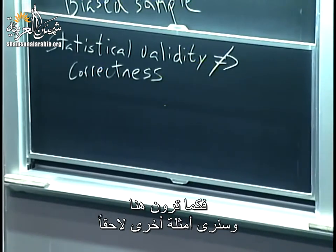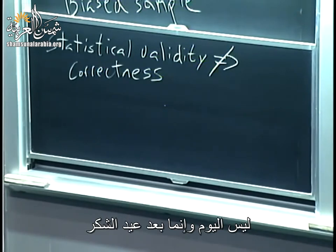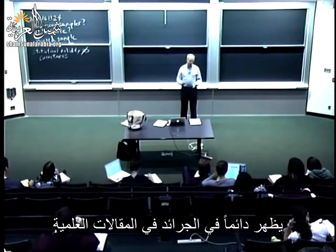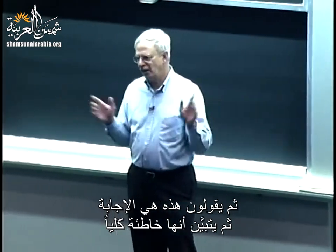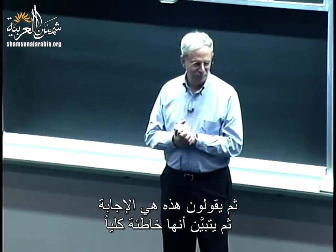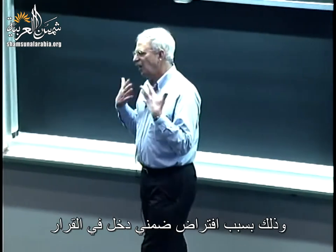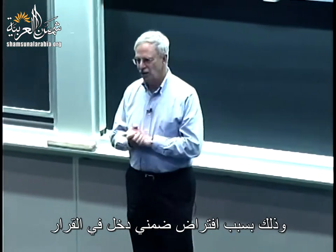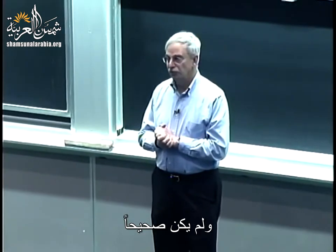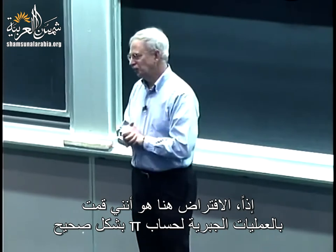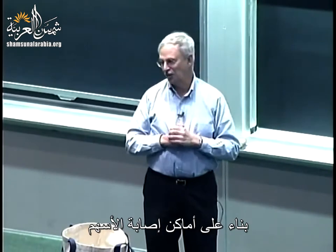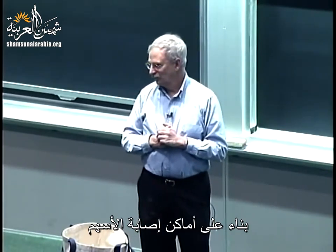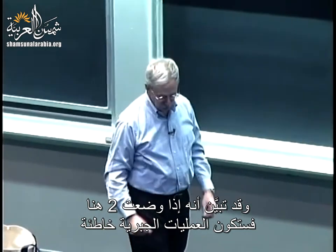The moral here is that just because an answer is statistically valid does not mean it's the right answer. And that's really important to understand, because this comes up all the time in newspapers and scientific articles, where people do a million tests, do all the statistics right, say here's the answer, and it turns out to be completely wrong. That's because there was some underlying assumption that went into the decision that was not true. So here the assumption is that I've done my algebra right for computing pi based upon where the darts land. If I put 2 there instead of 4, my algebra is wrong.